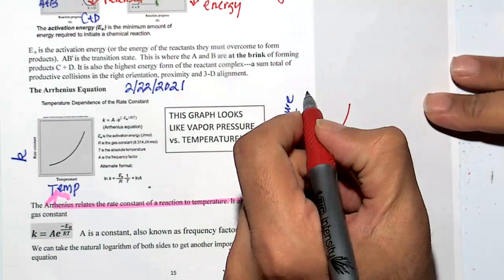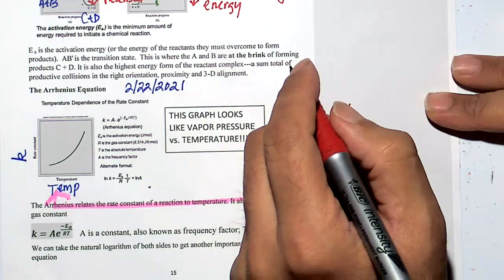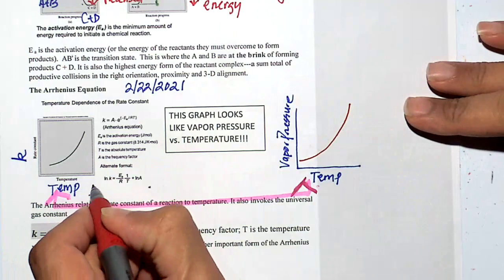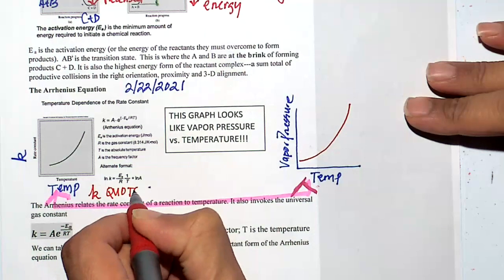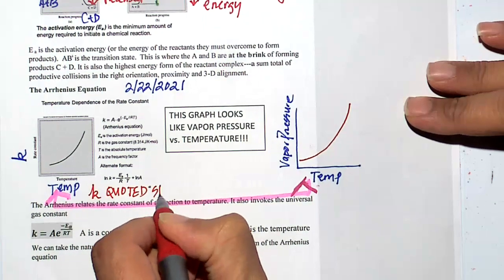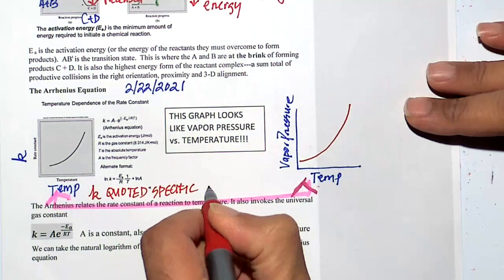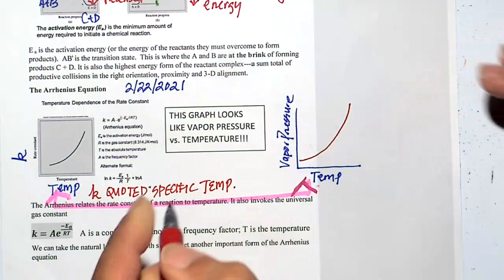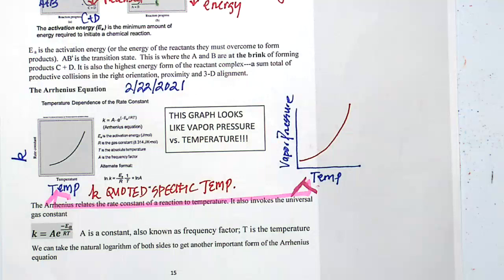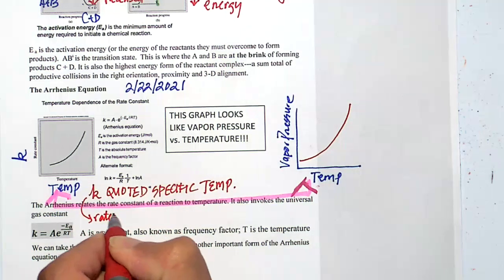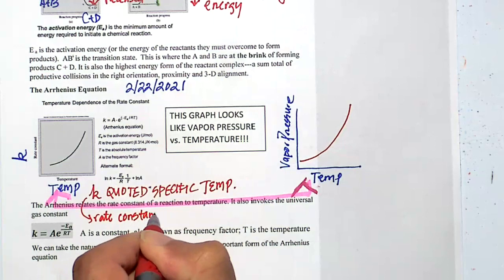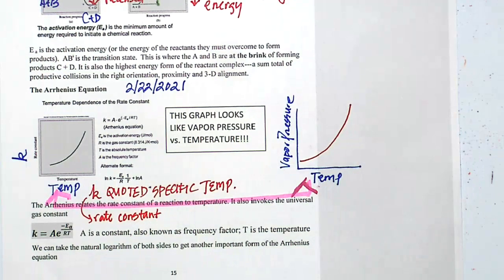Vapor pressure is quoted at a specific temperature — that was a test question. I want you to know that rate constant k is also quoted at a specific temperature. Just like vapor pressure, rate constant k is the rate constant — and that means we can have different values at different temperatures.